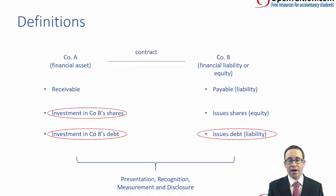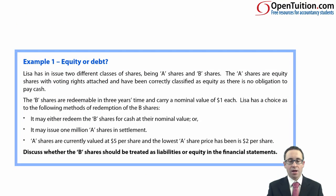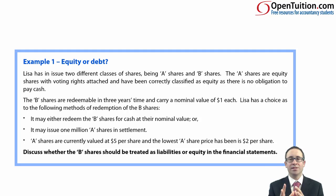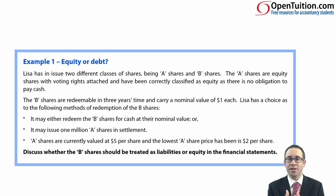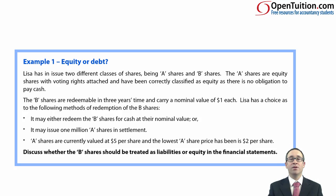Let's look at the example in your notes. The requirement says: discuss whether the B shares should be treated as liabilities or equity in the financial statements — so this is all about presentation. Is it a financial liability or is it equity? It is a financial liability if there is an obligation to pay cash; it is equity if there is no obligation and it just gives a residual interest in the net assets. Lisa has issued two different classes of shares: A shares and B shares.